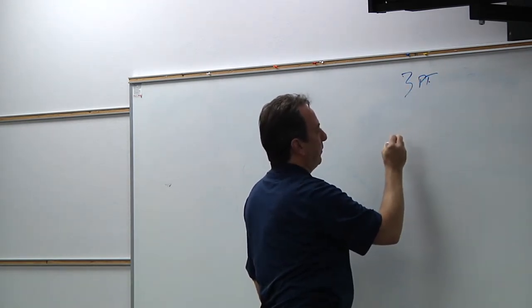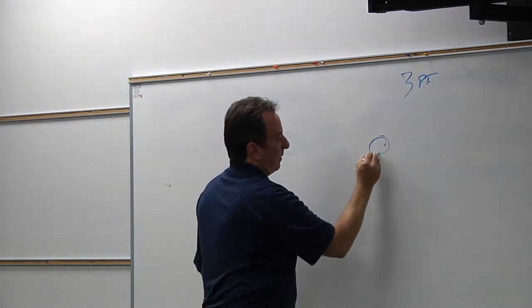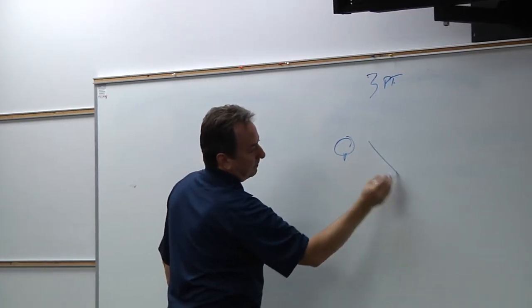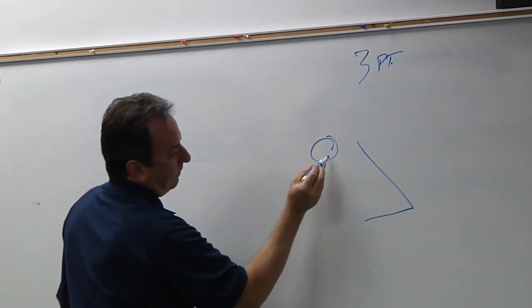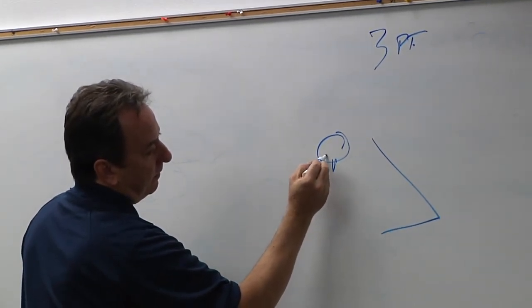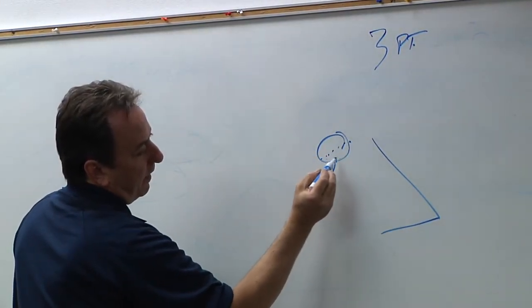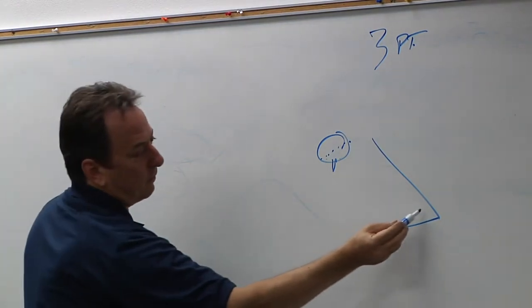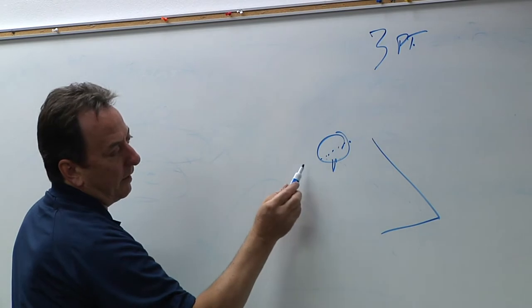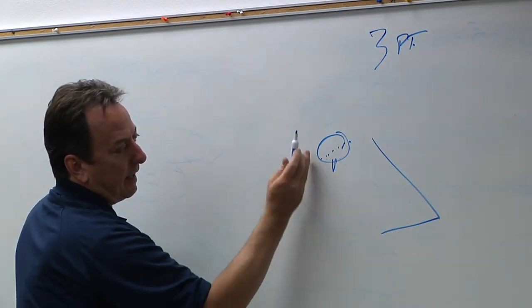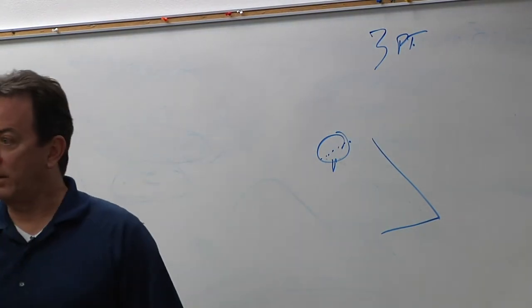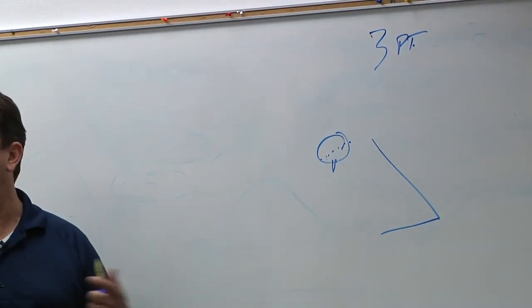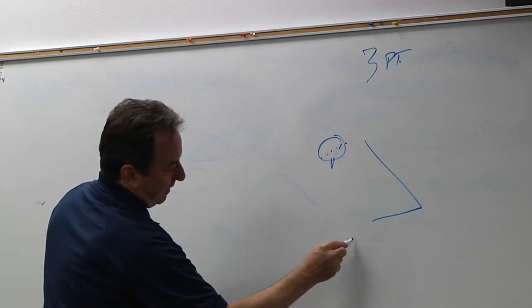But essentially what three-point lighting is, this is a man, we're looking from the top, is there is a key light that hits their face and lights both eyes so that you're not half in shadow. But you can see by this direction, you're going to get both sides, but allows a little shadow because we are 3D, and we shouldn't try to light it in such a way that we have no definition. Here's your camera.